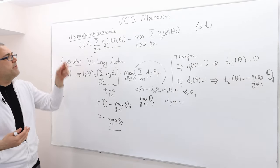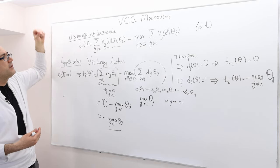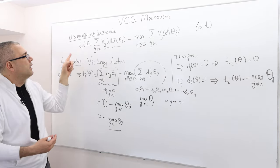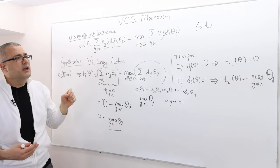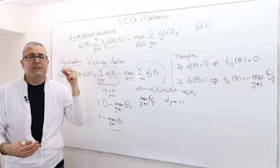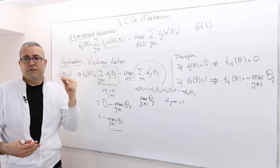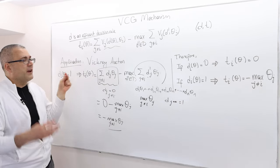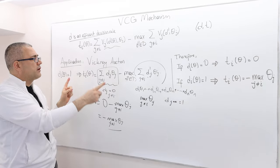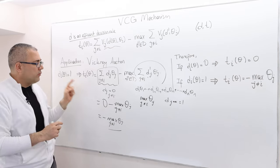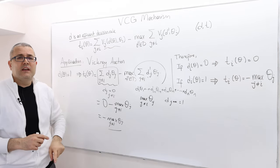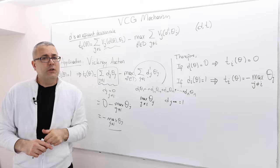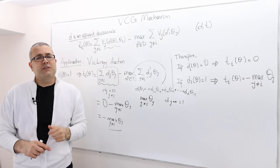So the VCG mechanism — the efficient decision rule together with this transfer function — is a strategy-proof social choice function. Once we apply it to the Vickrey auction environment, what we get is a mechanism identical to the second price auction.